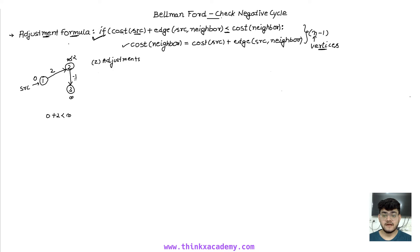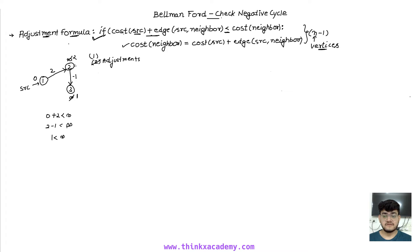Next, from node 2 to 3 with edge minus one: two minus one is one, which is less than infinite, so we reassign the cost of node 3 to one. In the second adjustment, zero plus two is not less than two, so no change. Then two minus one equals one, which equals the current cost, so no adjustment needed. After two adjustments we have found the shortest path.